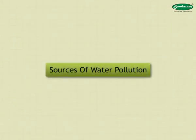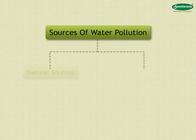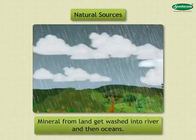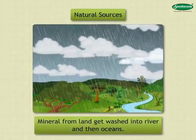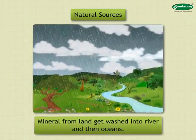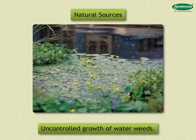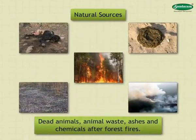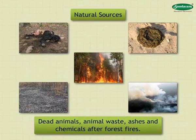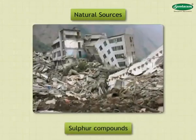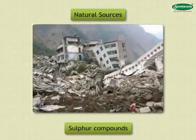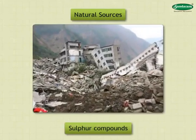Sources of Water Pollution: Water pollution is caused by several sources, both natural and man-made. Natural Sources: Due to heavy rains, minerals from land get washed into rivers and then oceans, leading to uncontrolled growth of water weeds. Similarly, dead animals, animal waste, ashes and chemicals after forest fires, and sulphur compounds after an earthquake get washed into water sources due to rain.